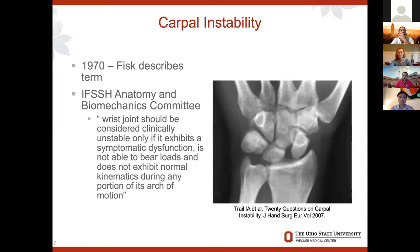So what is carpal instability? It was first described in 1970 by Fisk. The International Federation of the Society for Surgery of the Hand, Committee on Anatomy and Biomechanics, defined this as: a wrist joint should be considered clinically unstable only if it exhibits a symptomatic dysfunction, is not able to bear loads, and does not exhibit normal kinematics during any portion of its arc of motion.